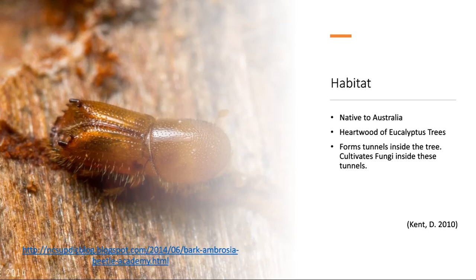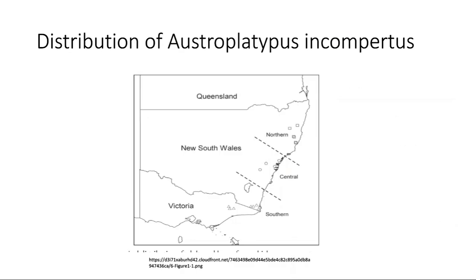Austroplatypus incompertus is native to Australia and is found between New South Wales and Victoria. It forms burrows in the heartwood of live eucalyptus trees, where it cultivates fungi and lives in a eusocial colony. Here is a map showing the range where the insects live.